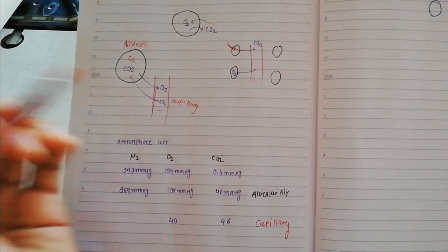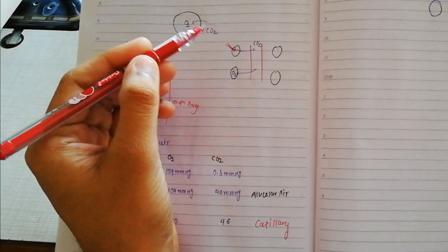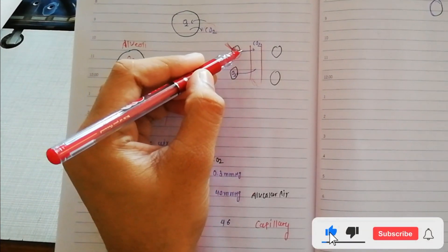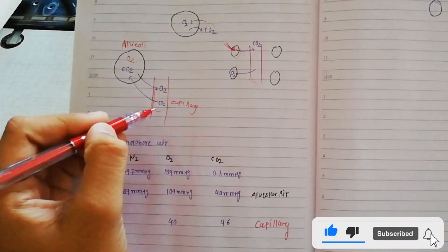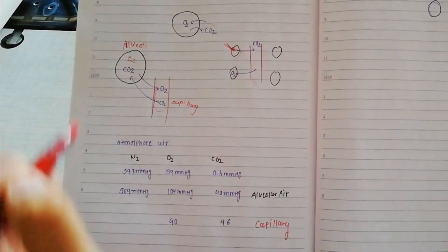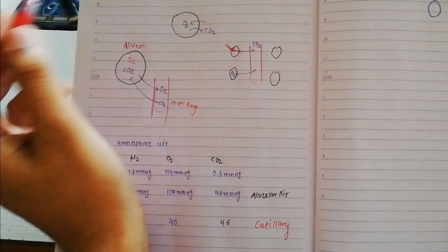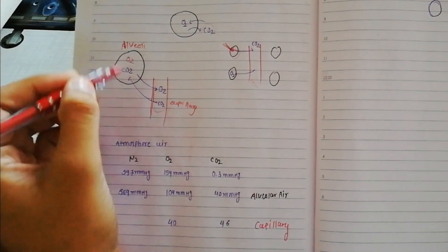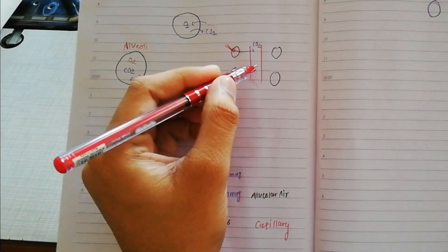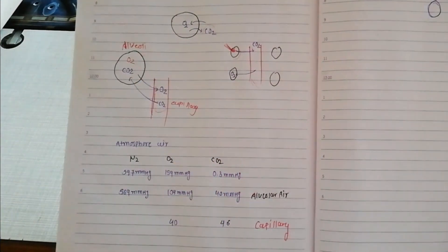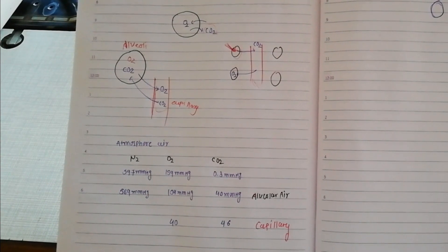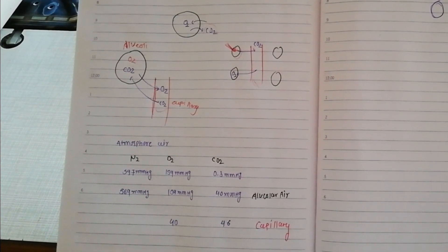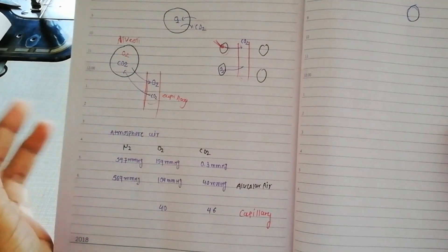Now let's see what happens at the tissue level. Suppose this is a tissue and this is a capillary. From the tissue, carbon dioxide diffuses into the capillary, then it goes to the alveoli, then it is thrown out of the body. Oxygen that we have taken goes to the alveoli, then to the capillary, and from the capillary it diffuses into the tissue. So oxygen is utilized in the body and carbon dioxide is excreted.